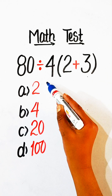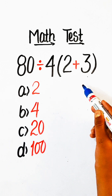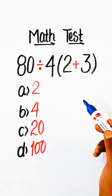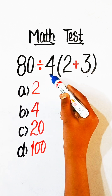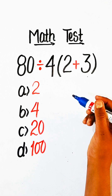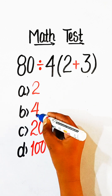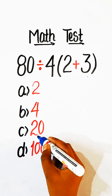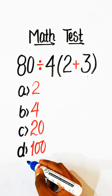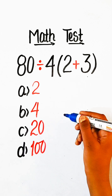Hello everyone, welcome back to my YouTube channel. In this video we will solve this basic math problem: 80 divided by 4, under bracket 2 plus 3, equals to what? Option A: 2, Option B: 4, Option C: 20, or Option D: 100. So try to solve it.